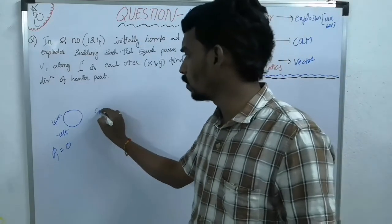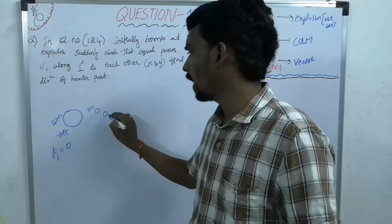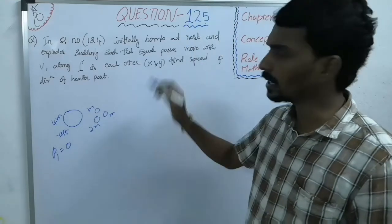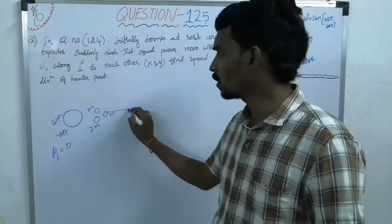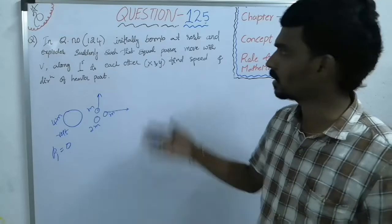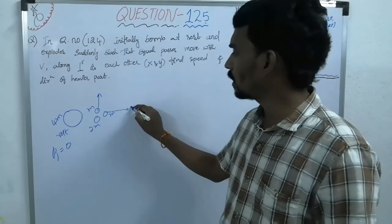Now it is suddenly divided into 3 parts again: m, m and another one is 2m. Such that, here the condition is given that the 2 equal masses are moving along 2 perpendicular directions, let us say x and y, with a speed v.